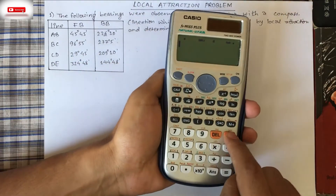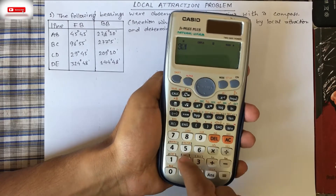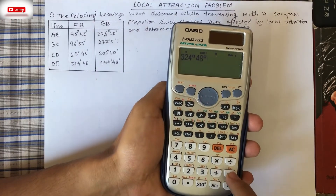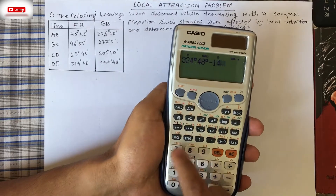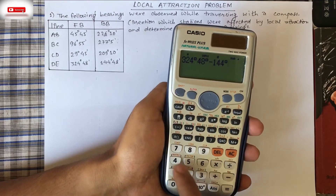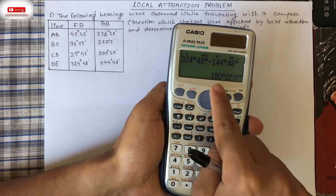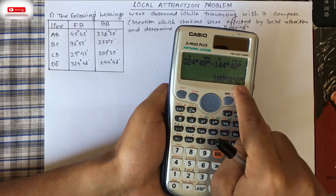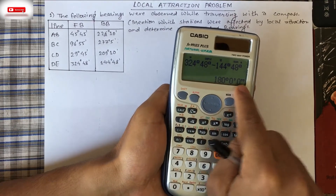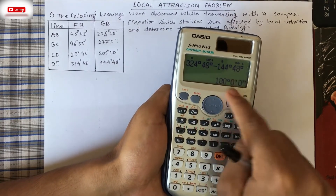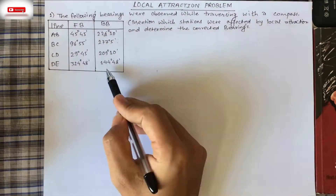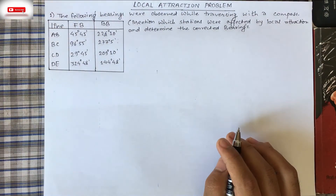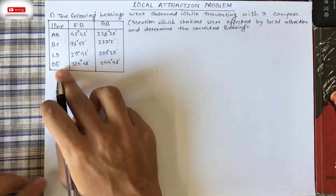Now let's check line DE. We have 324°48' minus 144°48'. This gives exactly 180°, 0 minutes, 0 seconds. So this line DE is free from local attraction.